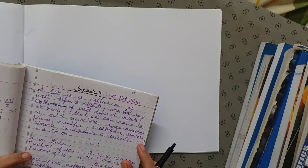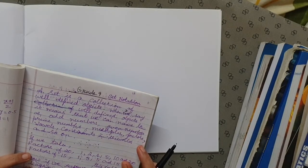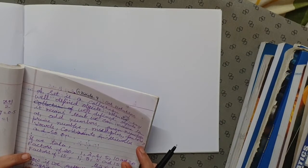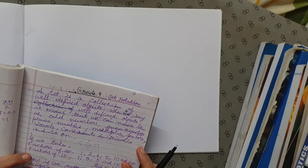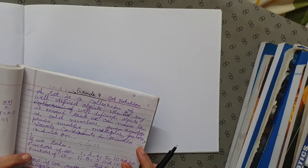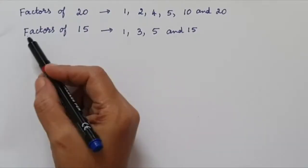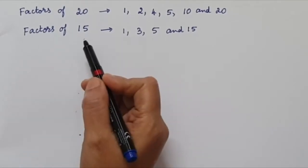Set notation. A set is a collection of well-defined objects. When I say well-defined object, it means that we can name them as odd numbers, prime numbers, multiples, factors, vowels, continents of the world, and so on. Let us take the factors of 20 and the factors of 15.